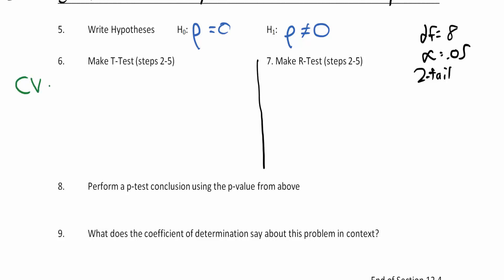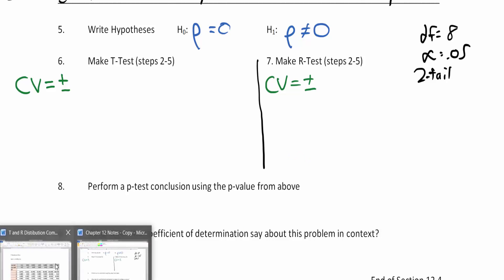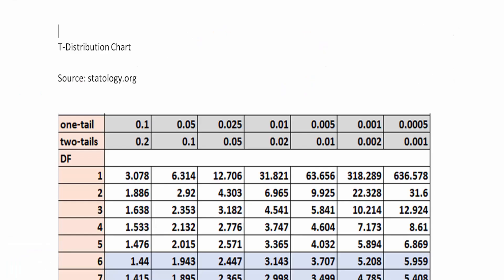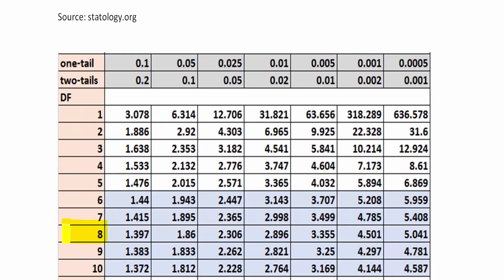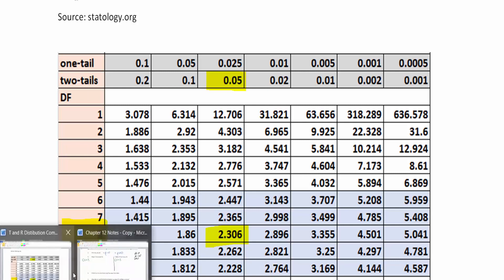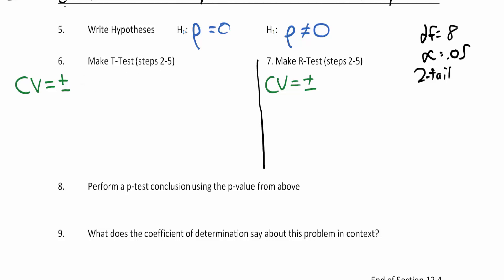Let's look at the t-chart: 8 degrees of freedom, two-tail, alpha of 0.05 — that puts us at 2.306. So plus or minus 2.306 is where our test value needs to be to reject the null hypothesis. Our test value executed by the calculator was 1.65 — so close, yet so far.